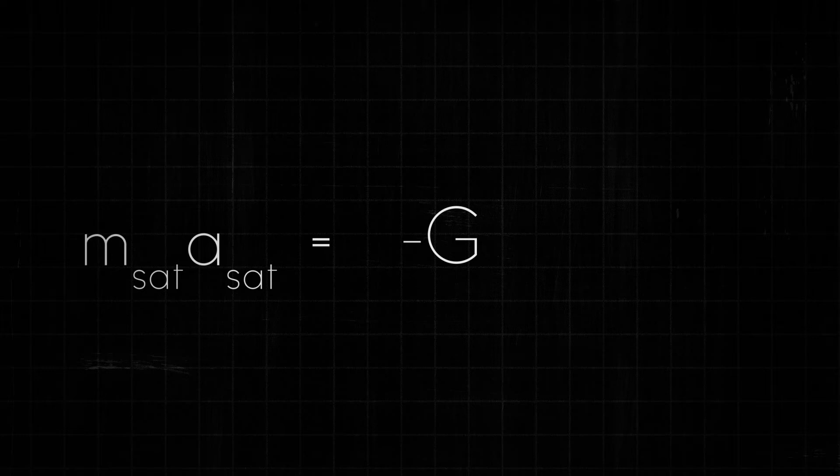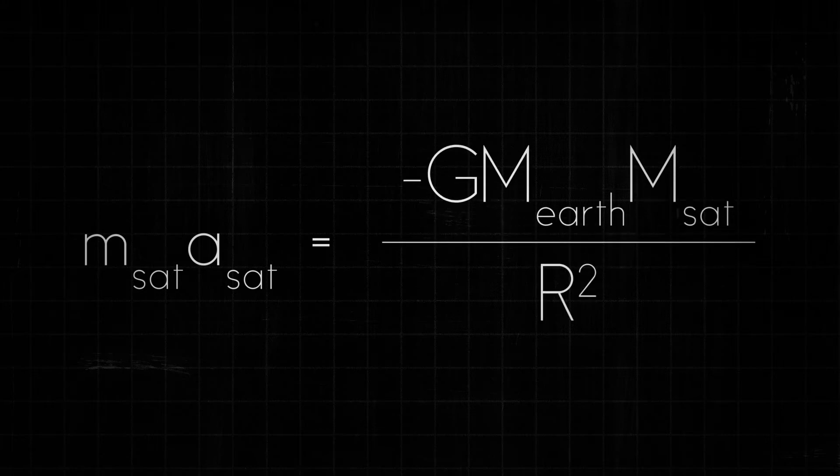Since both these equations give us force, we can set them equal to each other. This results in the mass of the satellite times the acceleration of the satellite is equal to the negative of the gravitational constant times the mass of the Earth times the mass of the satellite, all divided by the distance between the center of the Earth and the satellite squared.